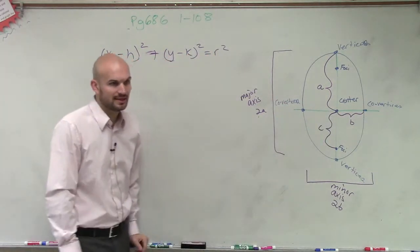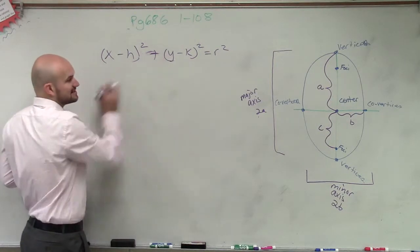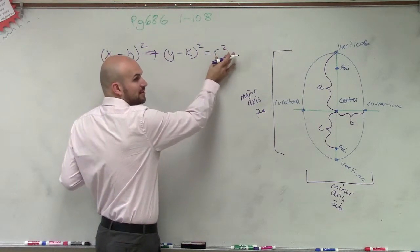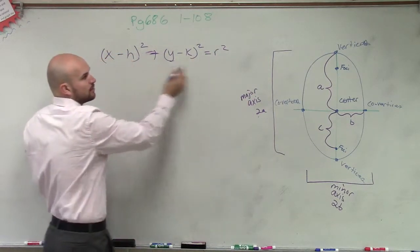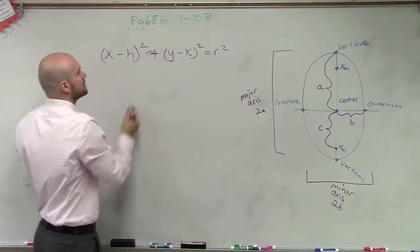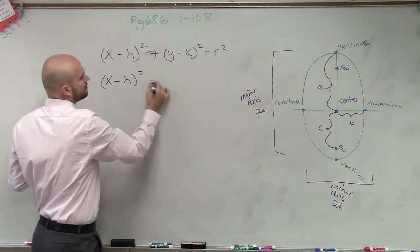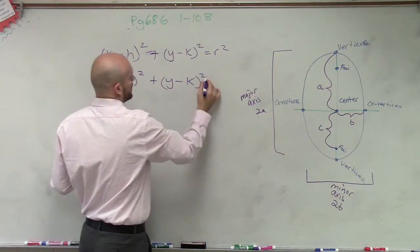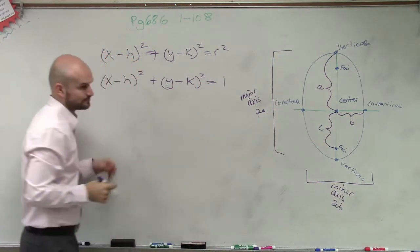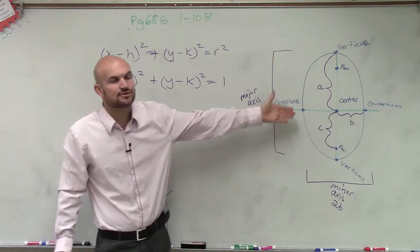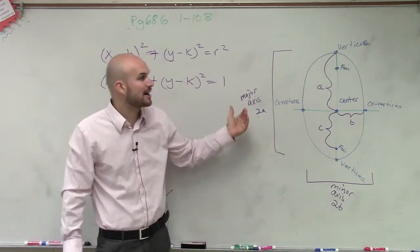So when you have a vertical ellipse, our equation looks very similar. But rather than having an equal value, having a value that's equal for all of it, we're going to have to change this over. So what we have is x minus h squared plus y minus k squared equals 1. And then to help us differentiate between what is the major axis and what is the minor axis,